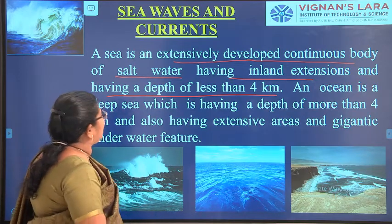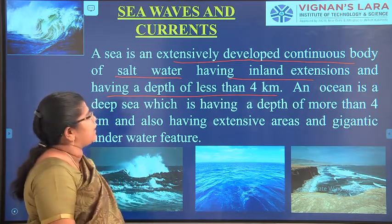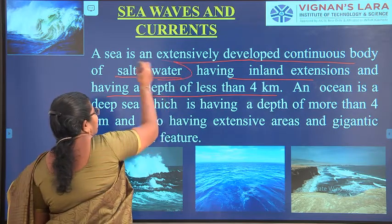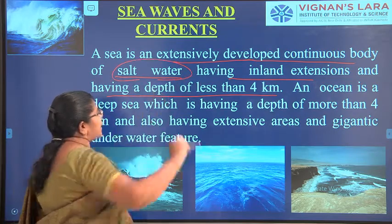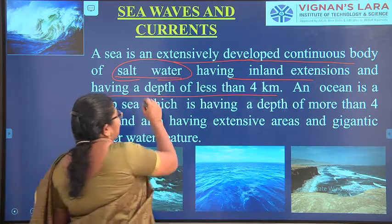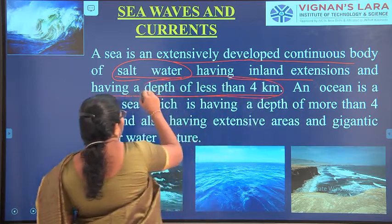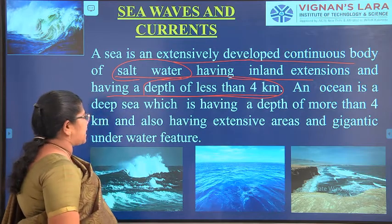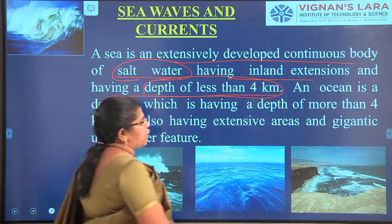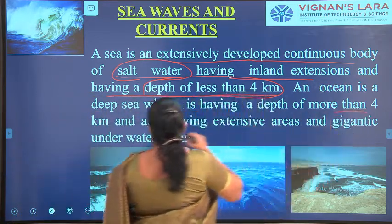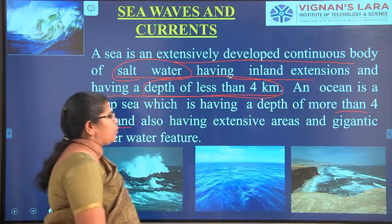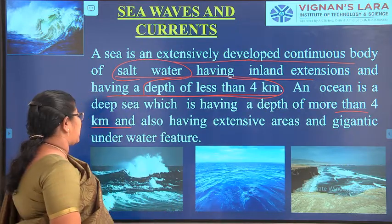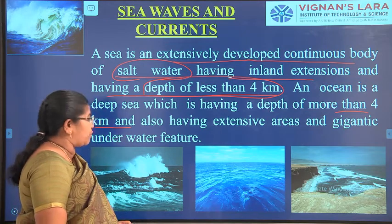The sea is an extensively developed continuous body of salt water, and chemical reactions will be present in it. It has a depth of less than 4 kilometers. An ocean is a deep sea having a depth of more than 4 kilometers, with an extensive area and gigantic underwater features.